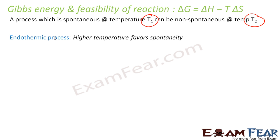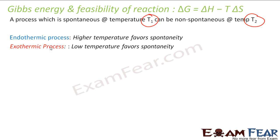In endothermic reactions, higher temperature favors spontaneity, and in exothermic reactions, lower temperature favors spontaneity. The spontaneity of the reaction is dependent on temperature because delta G has a temperature factor in it.